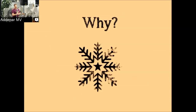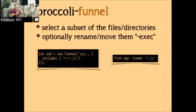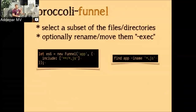In the Broccoli ecosystem there are many plugins, but most are subclasses of broccoli-plugin. Most user plugins are subclasses of either broccoli-filter or broccoli-caching-writer. The four primary plugins you'll interact with are: Funnel, Merge, Filter, and Caching Writer. Broccoli Funnel is like the POSIX 'find' command — find from this directory a subset of files and pass it through the Broccoli pipeline. For example: give me all the JavaScript files inside the app directory, i.e., app/**/*.js.